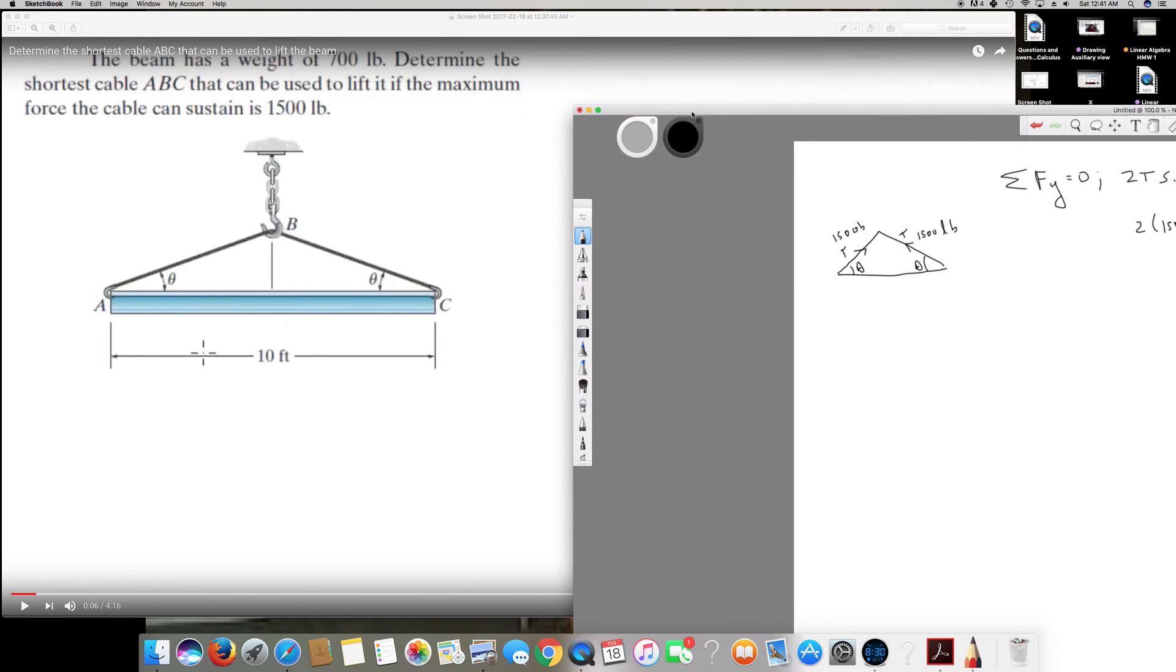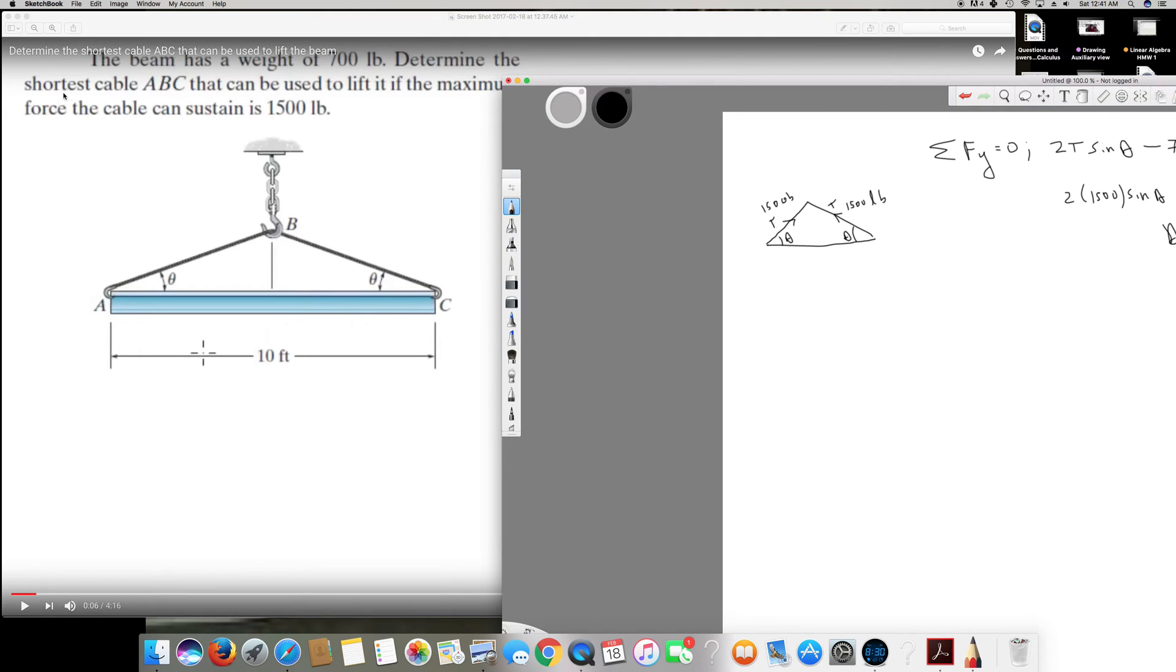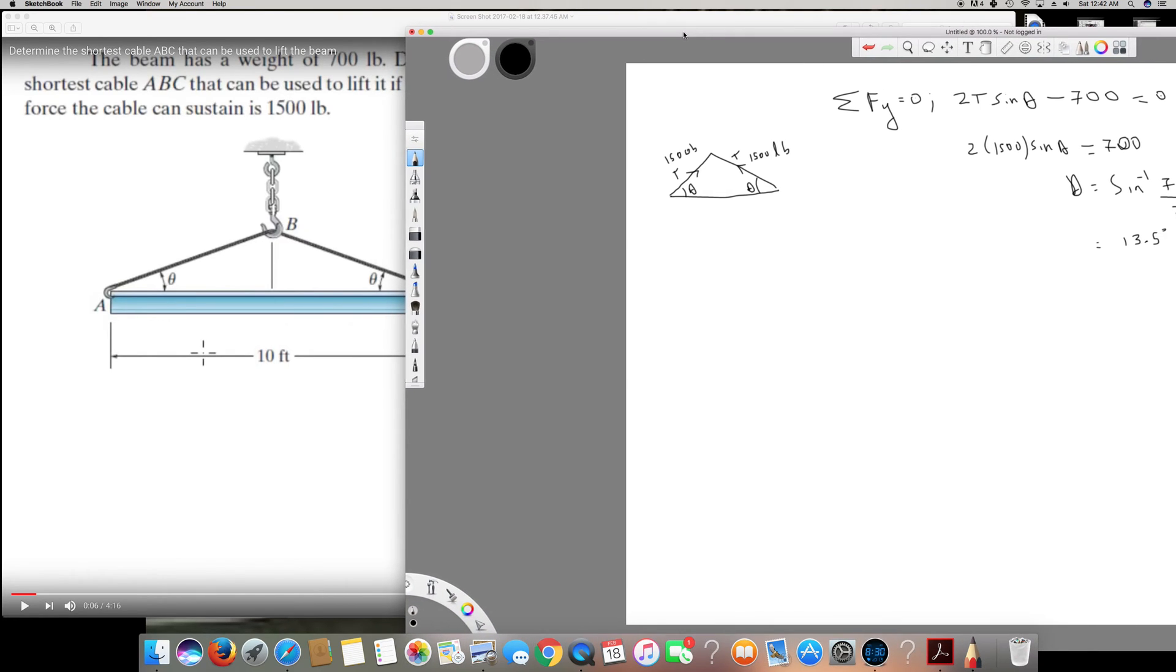So the question says determine the shortest cable ABC. So what does the shortest ABC mean? This total distance of this cable - what is the shortest? So we are at this angle - because when 1500 is the maximum, it means it's going to be the shortest.